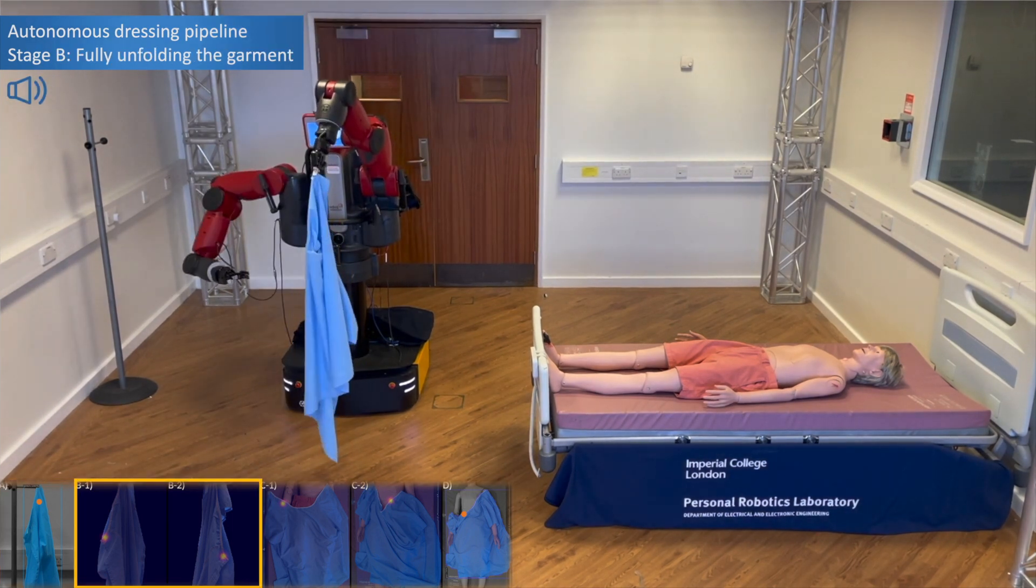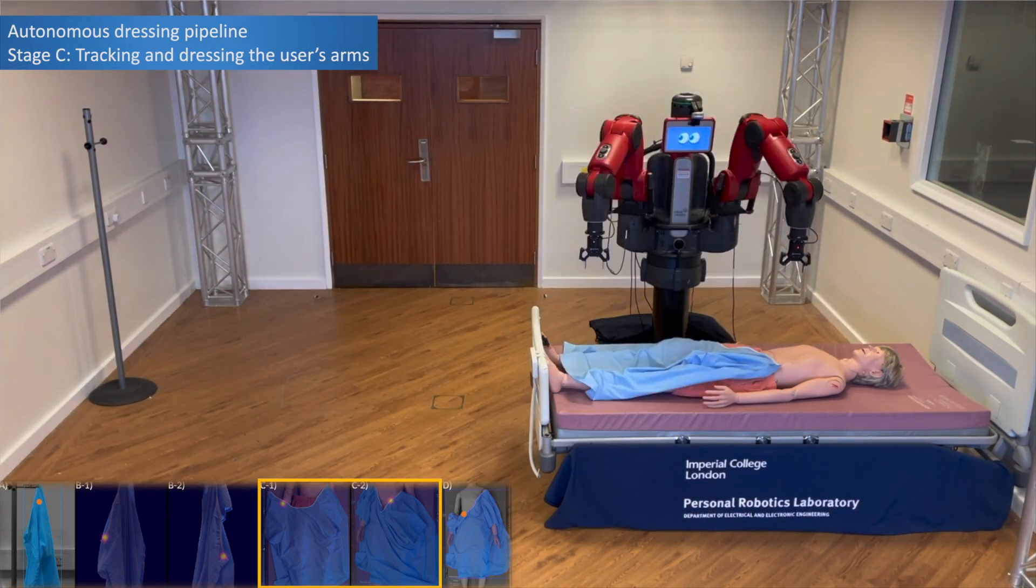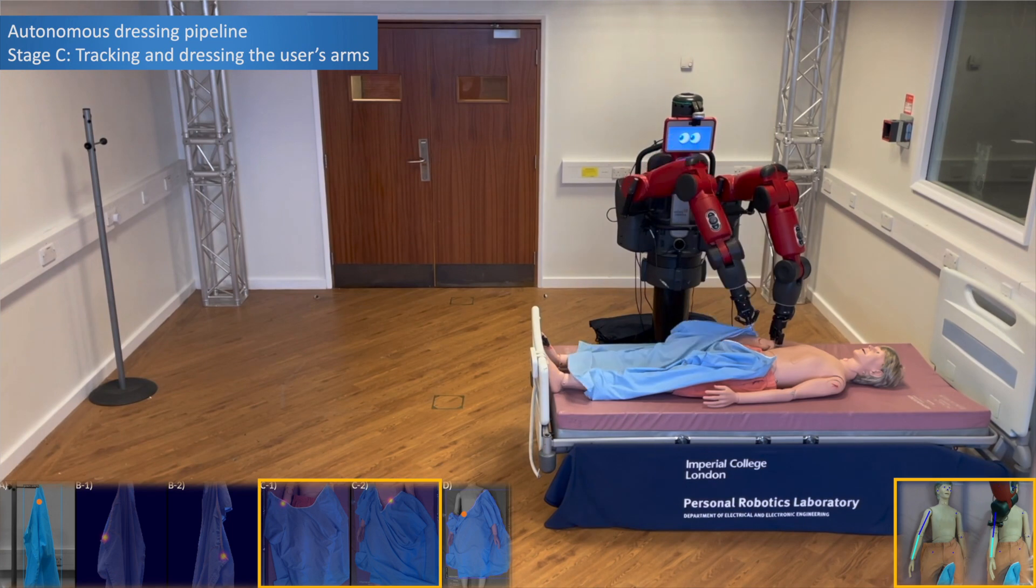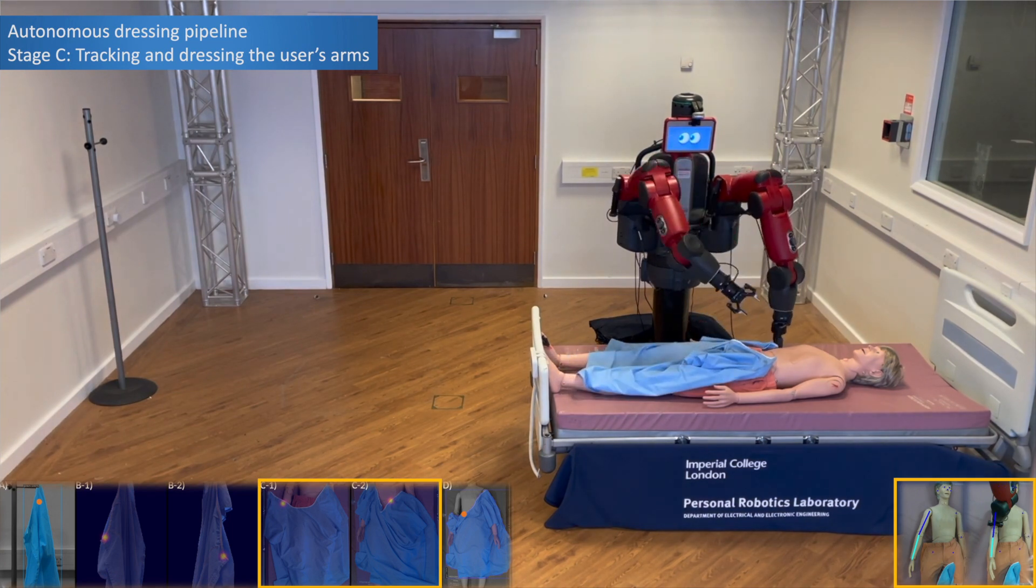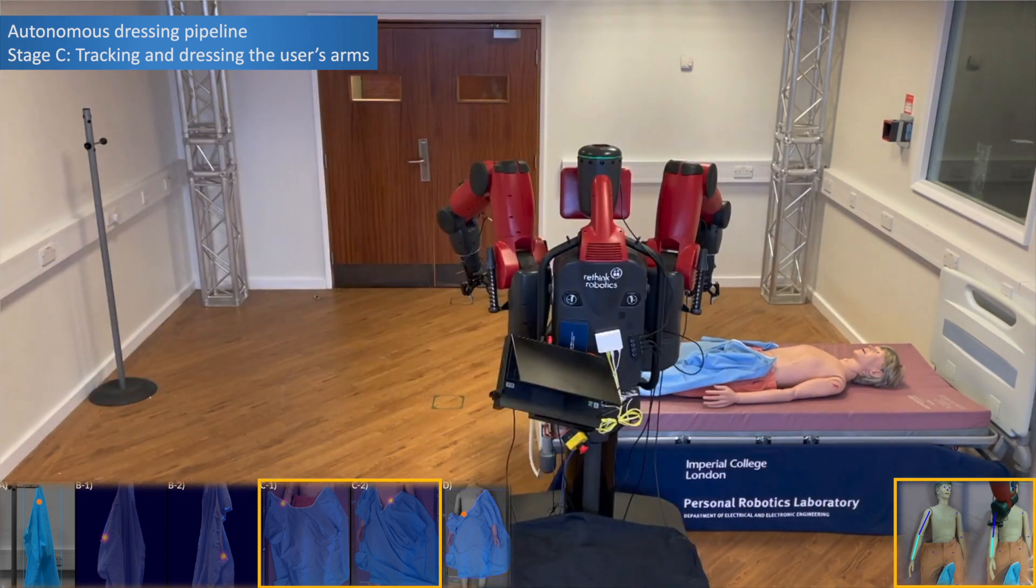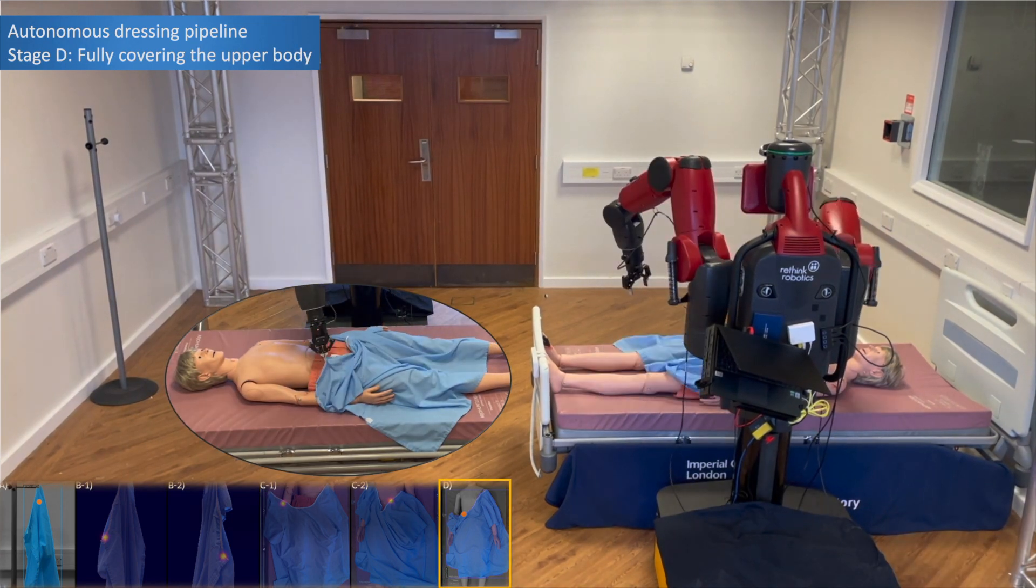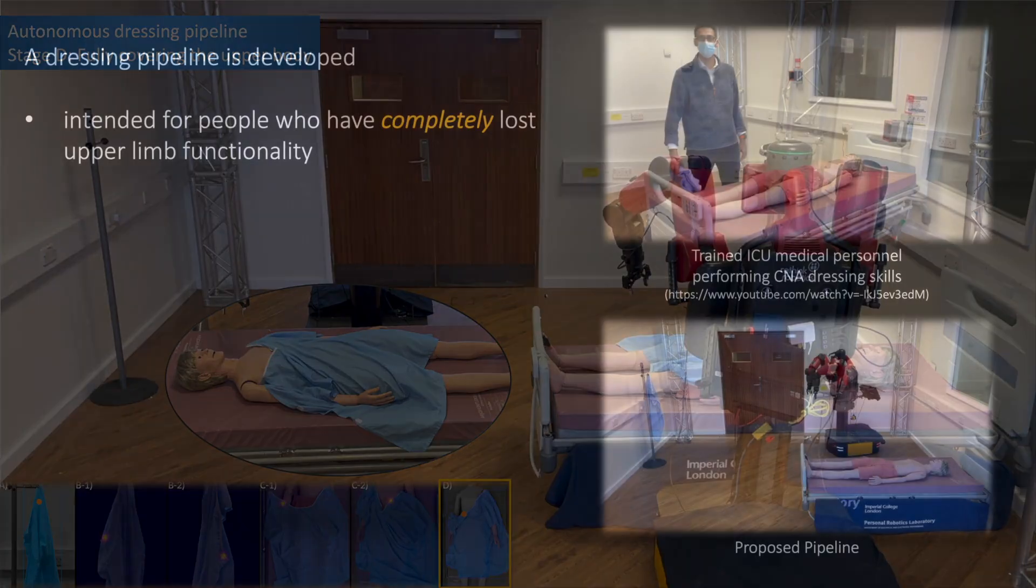In stage A, the robot grasps a hospital gown hung on a rail. In stage B, the robot fully unfolds the gown. In stage C, the robot navigates around the bed to dress the user. In stage D, the robot finally spreads the gown to cover the upper body.